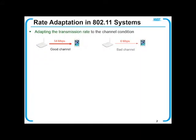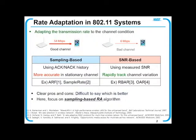We can categorize rate adaptation algorithms of Wi-Fi systems into sampling-based algorithms and SNR-based algorithms. Sampling-based ones use ACK/NACK histories to estimate channel conditions.